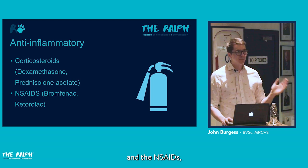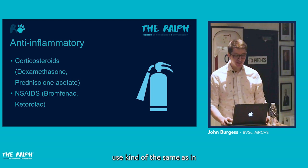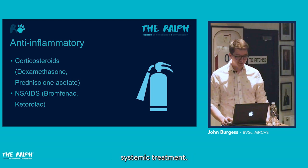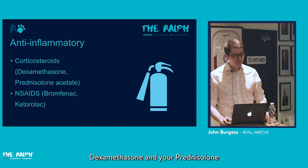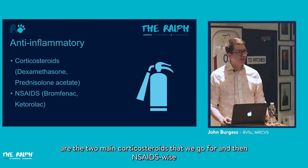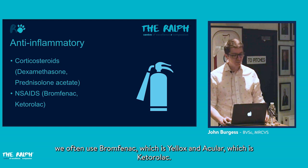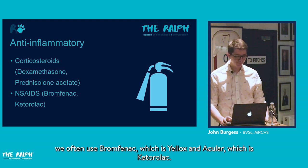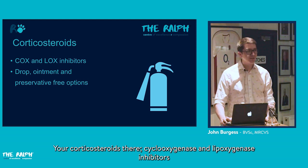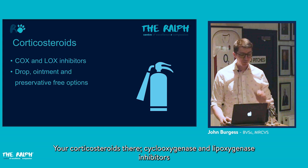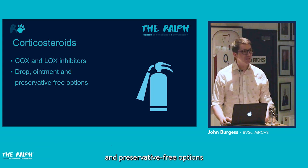Moving on to anti-inflammatories: the two main classes are corticosteroids and NSAIDs, similar to systemic treatment. The main corticosteroids we use are dexamethasone and prednisolone, and for NSAIDs we often use bromfenac, trade name Yellox, or ketorolac, trade name Acular.